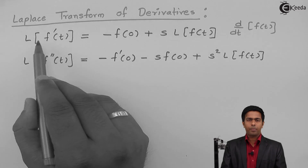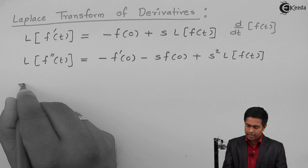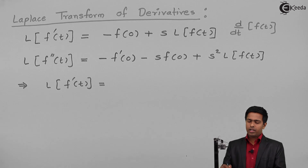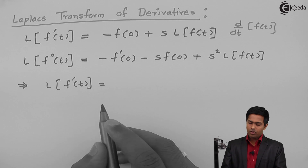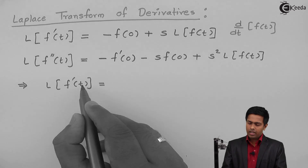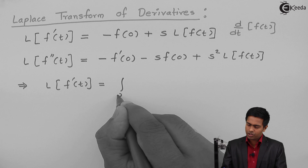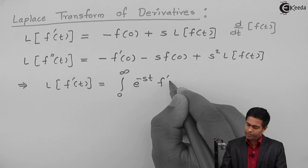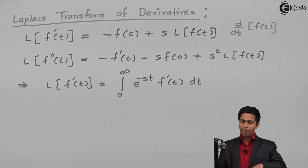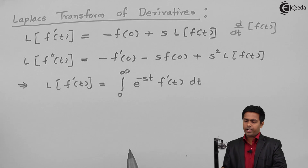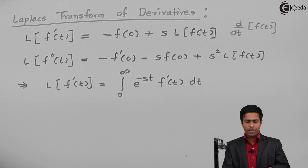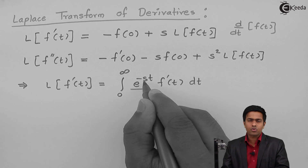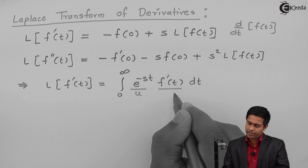I will start with the first property — we want to prove that Laplace of f'(t) equals the given result. Starting with the definition of Laplace transform: L{f'(t)} is the integral from 0 to infinity of e^(−st) times f'(t) dt. To evaluate this, I will apply the integration by parts rule, considering e^(−st) as u and f'(t) as v.